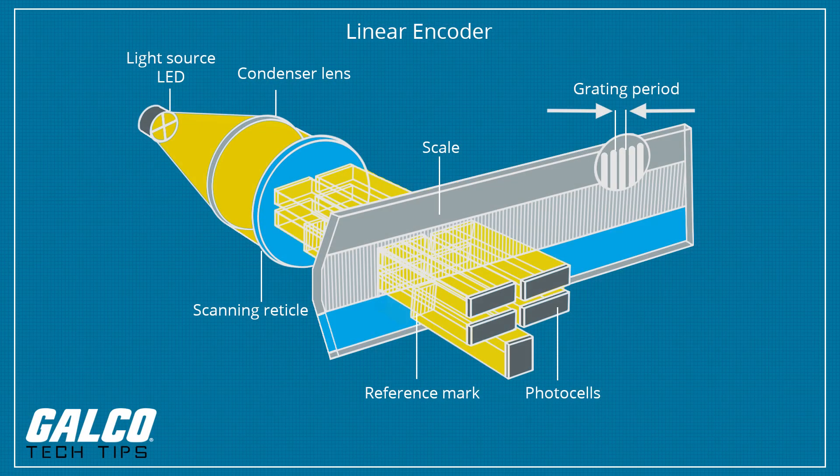A linear encoder is a sensor, transducer, or read head paired with a scale that encodes position. The sensor reads the scale in order to convert the encoded position into an analog or digital signal, which can then be decoded into position by a digital readout or motion controller.